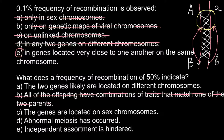Answer C: the genes are located on the sex chromosomes. As I already mentioned, sex chromosomes obey normal rules — only if it is not X and Y, in which case recombination would be zero. Answer D: abnormal meiosis has occurred. This is also not true because 50% recombination is what can normally be observed.